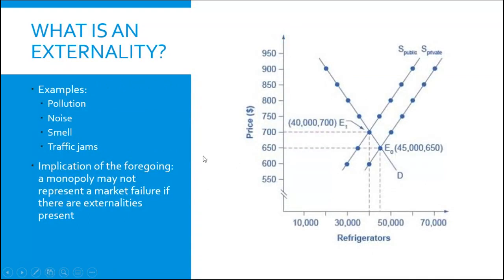An externality is an effect that is placed on a third party who is not part of the original transaction. For example, if a factory produces pollution — let's say this is an automobile factory — the two parties involved, the buyer and the seller of the automobile, do not bear all the costs. There are costs in the form of pollution that fall on third parties, the people living around the factory. Noises can be externalities as well as smells, traffic jams, things like that.